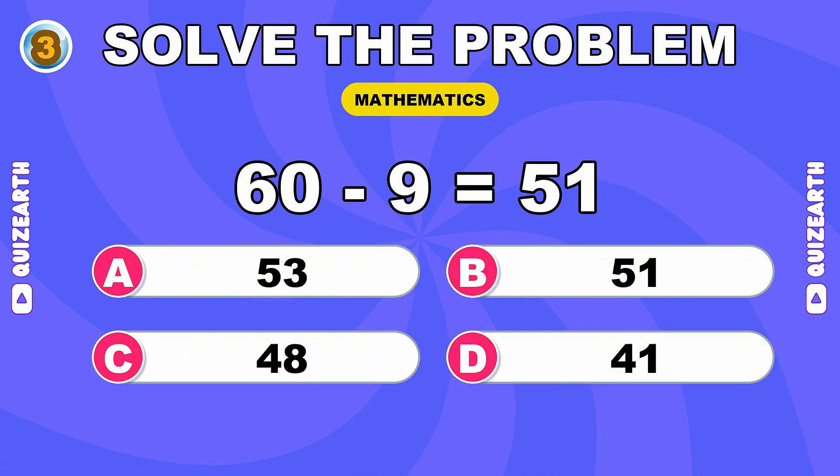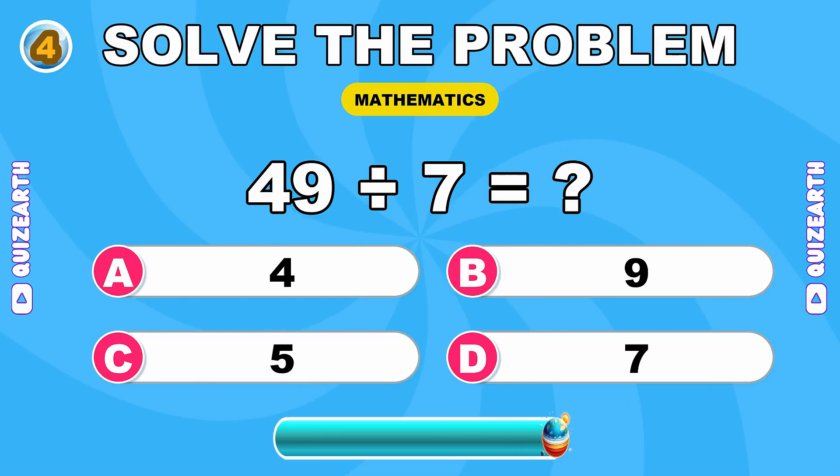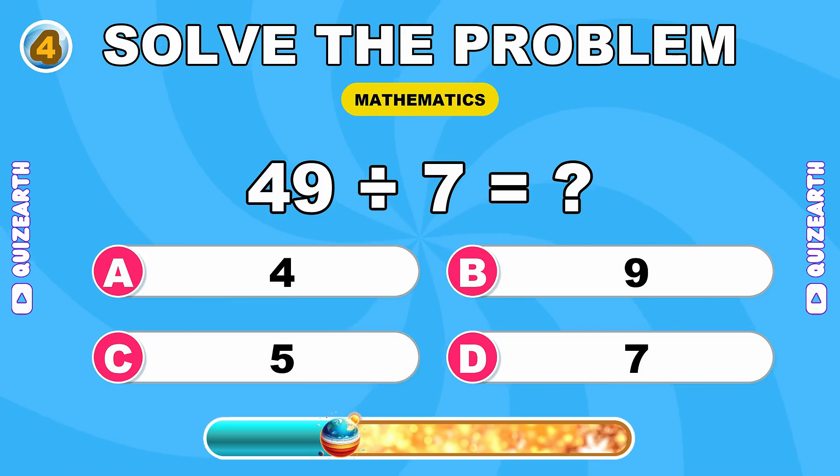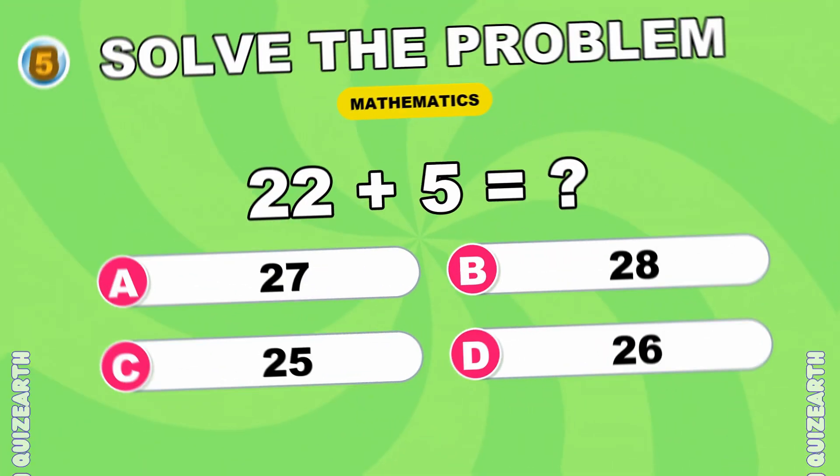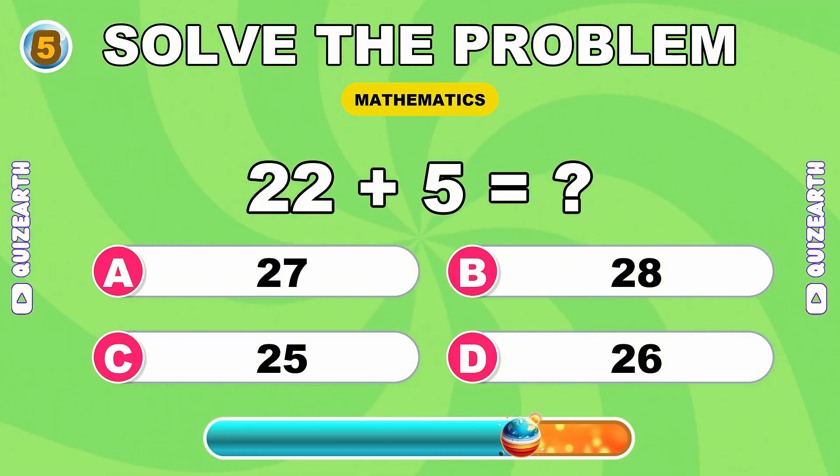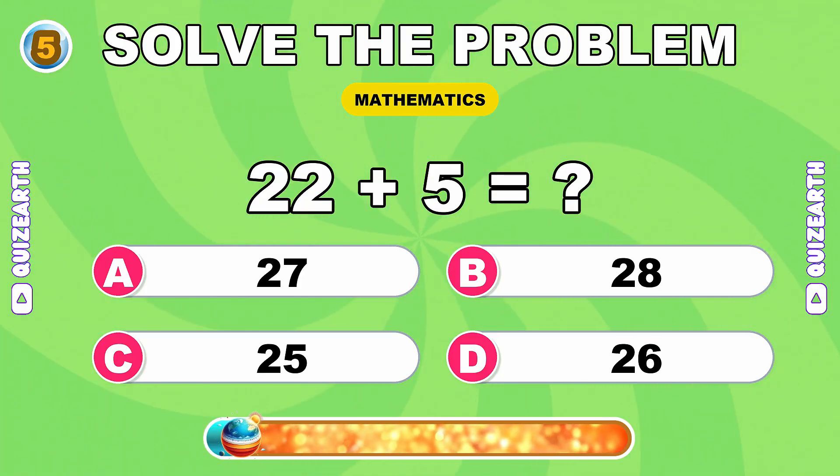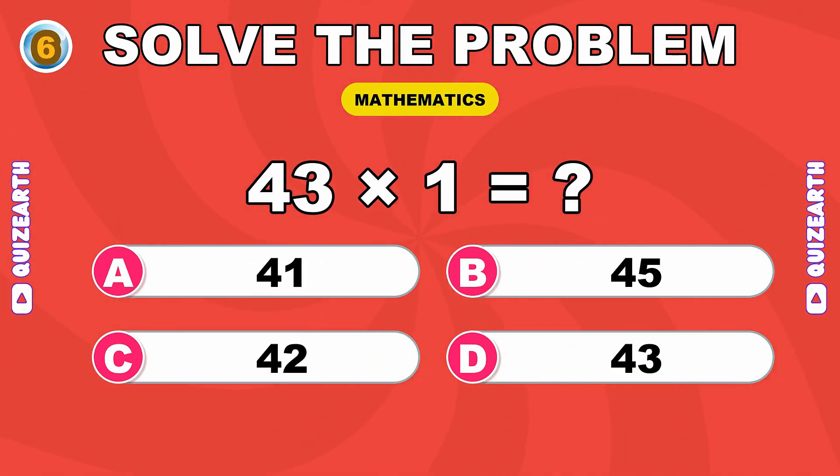You're on point, 51. What happens when you divide 49 by 7? Looking sharp, 7. What is 22 plus 5? Crushing it, 27.